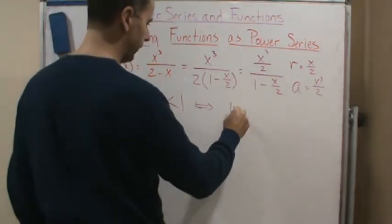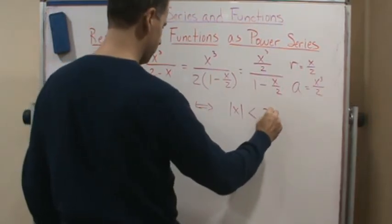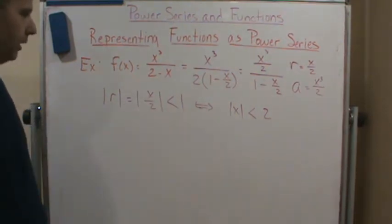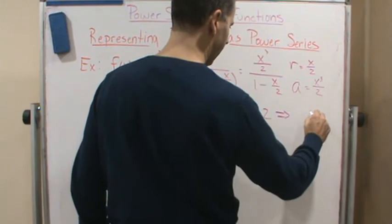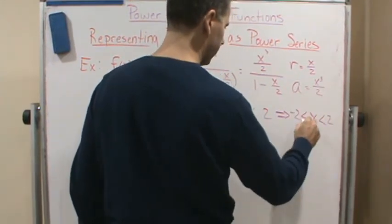the absolute value of x has to be less than 2, because the absolute value of 2 is 2, right? So now this gives me x is less than 2 and greater than negative 2, so there's my interval of convergence.